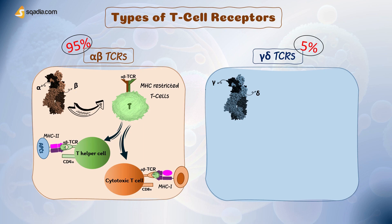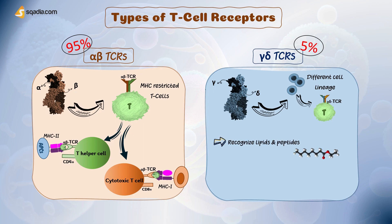In contrast, gamma-delta TCRs, found on about 5% of human T-cells, are derived in the thymus as a separate cell lineage from those that express alpha-beta TCR molecules. These gamma-delta TCRs differ in two important ways. First, they can recognize lipid molecules as well as large peptides, whereas alpha-beta TCRs cannot bind large-sized molecules at the binding groove. Second, they do not always recognize MHC and are not MHC-restricted, meaning gamma-delta TCRs can detect antigen directly without needing an MHC-antigen complex.